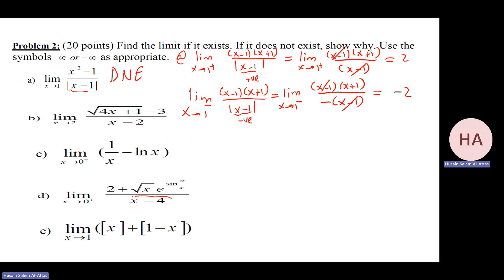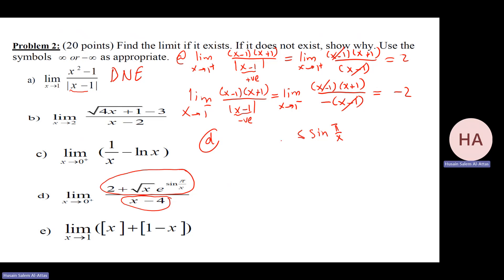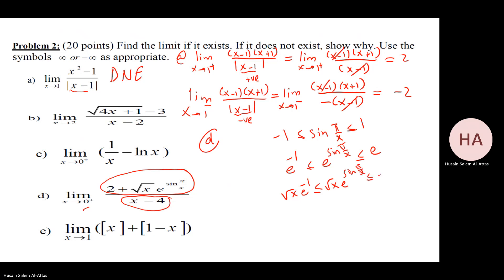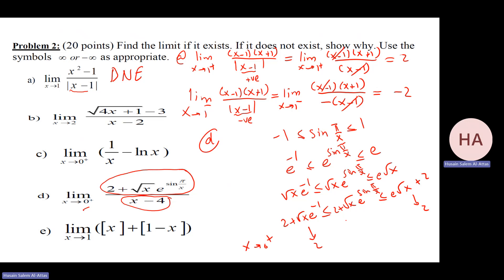Part d: using squeeze theorem, sine of y over x is between minus one and one. Multiply by x squared, which is always positive, so the inequality is not affected. As x goes to zero from the right, square root of x also goes to zero. The numerator goes to zero by squeeze theorem. The denominator derivative is minus four. So the result is two over minus four, which is minus one-half.